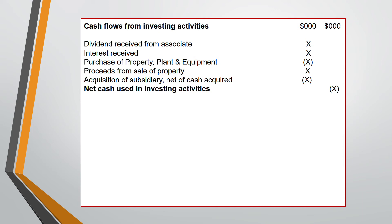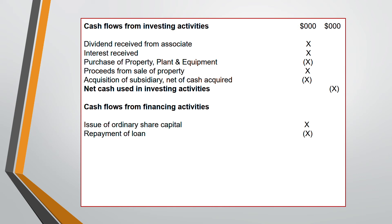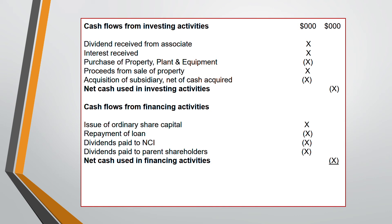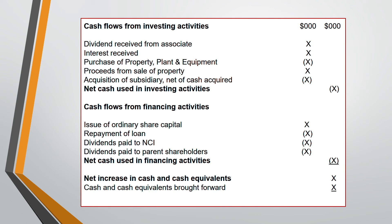For financing activities - the third and last section: ordinary share capital issued is an inflow, repayment of loans is a deduction because cash is going out. Dividend paid to NCI comes under financing activity as a deduction - you have to do a working for that. Dividend paid to parent shareholders is also deducted. Dividends received from associates go under investing activity. Finally, net cash increase in cash and cash equivalents is added to opening cash and cash equivalents to reconcile to the closing balance in the statement of financial position.